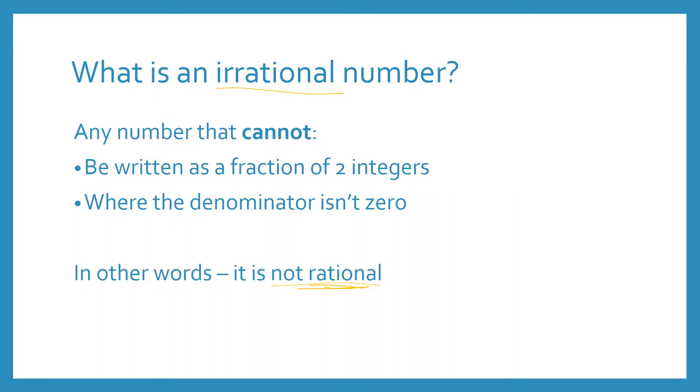So examples of irrational numbers that you've probably heard of before are something like pi. So you might think that pi is actually just 22 divided by 7, and we often think of it this way. And while this is close to what pi is, it's not exact. So this number is 3.142857...